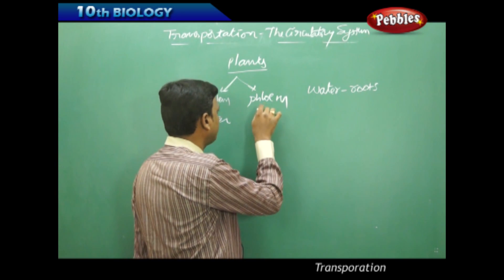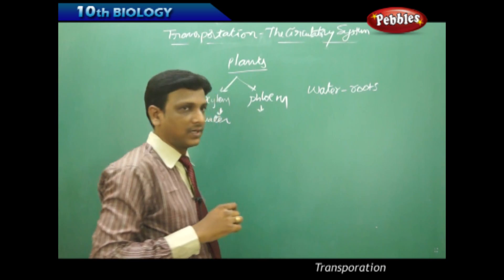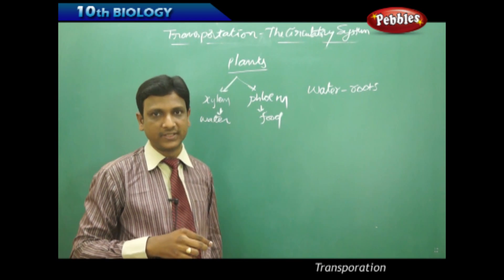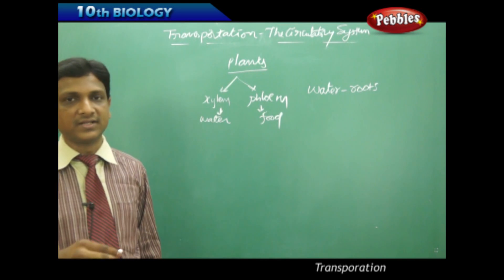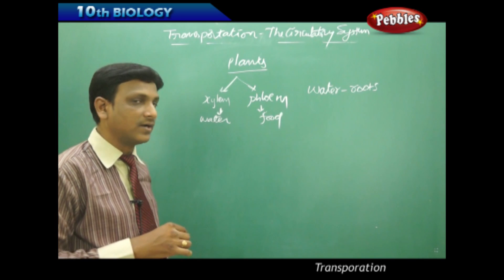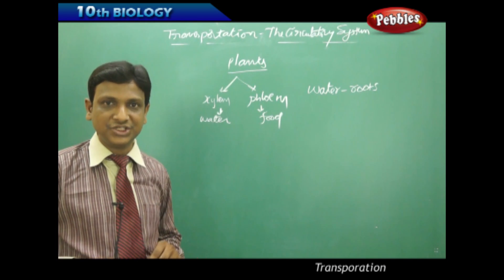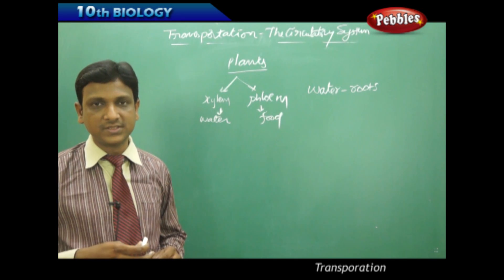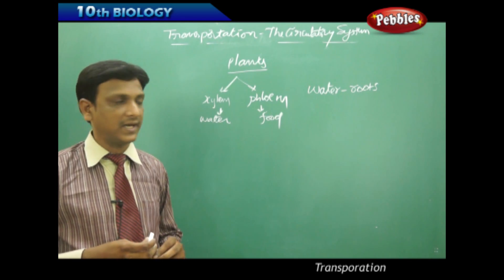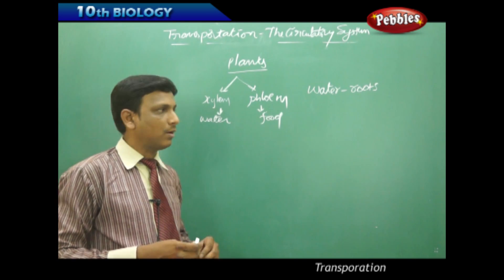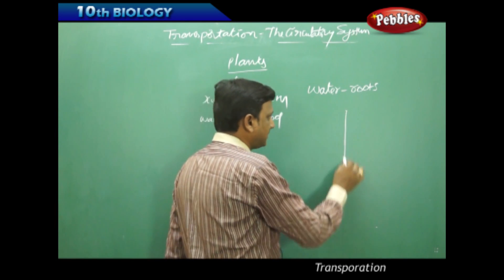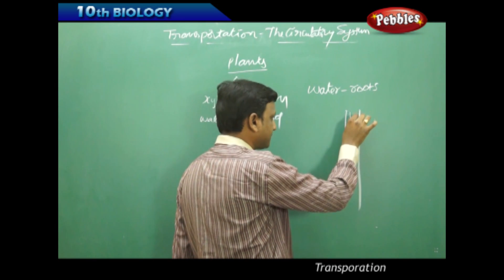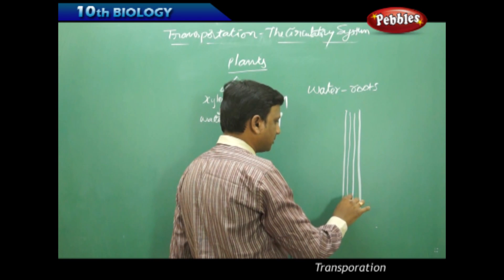Phloem takes part in the conduction of food material prepared in the leaves to different parts of the body. So phloem conducts food materials and xylem conducts water in plants. These are the two major conductive tissues which conduct water, minerals, and the food that is prepared. Now, if we look at the internal structure of a stem of a plant or tree, there are xylem and phloem vessels present in the trunk or stem.